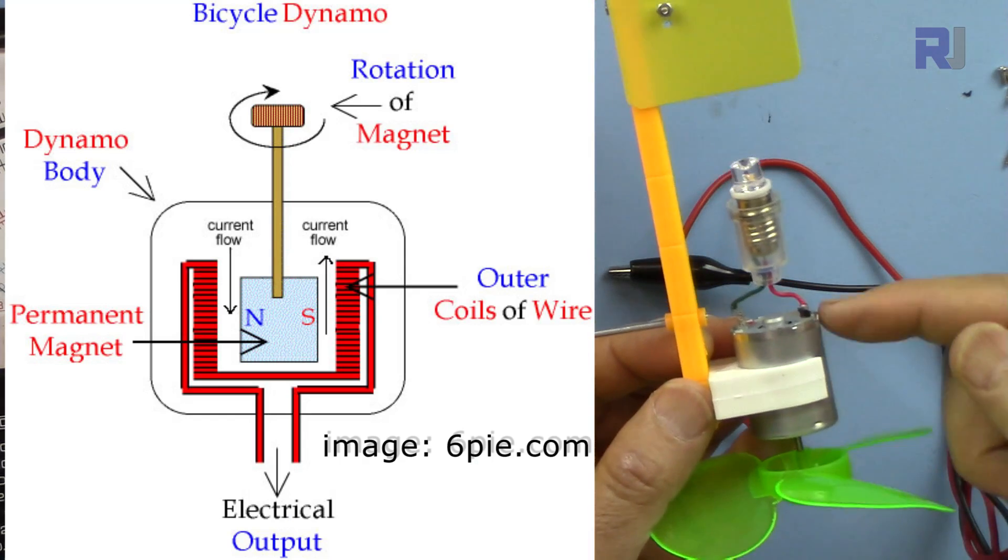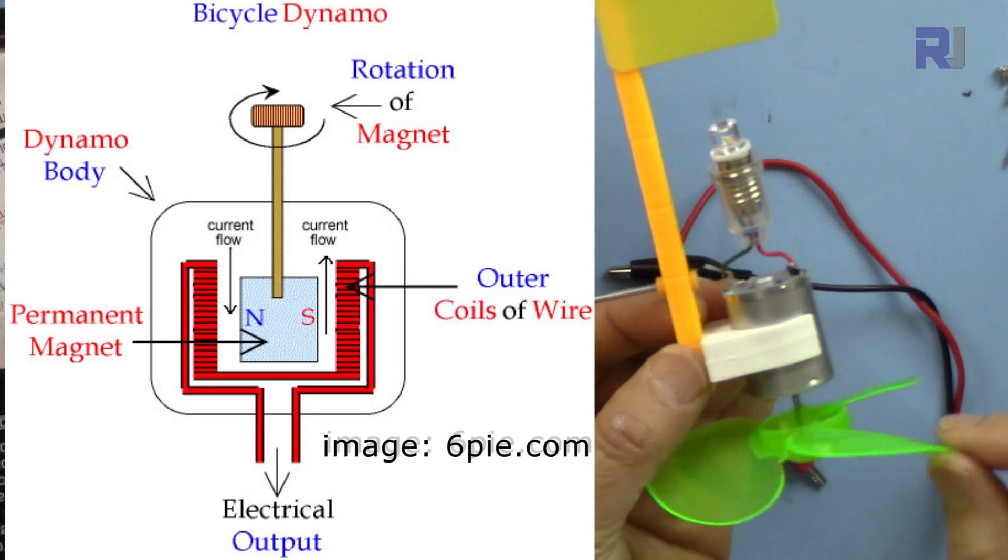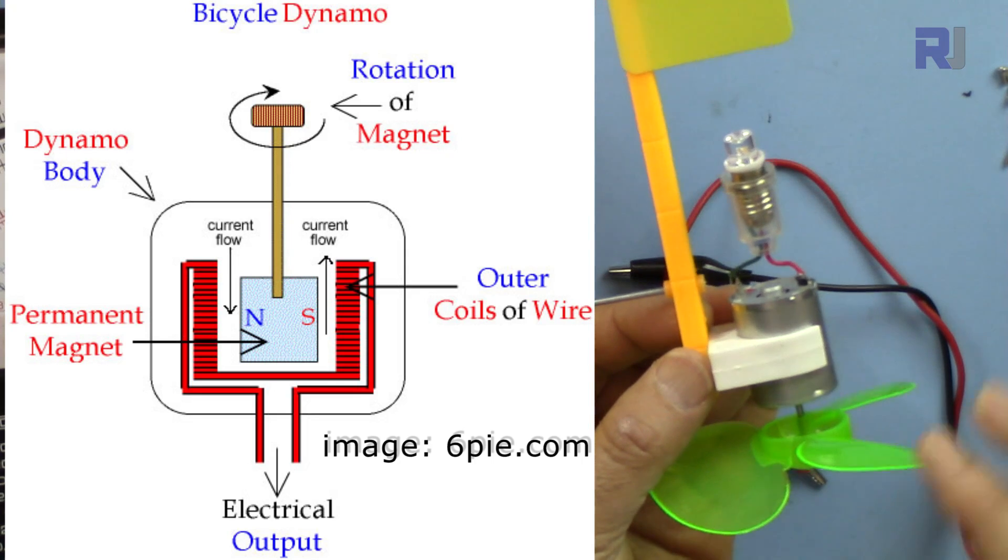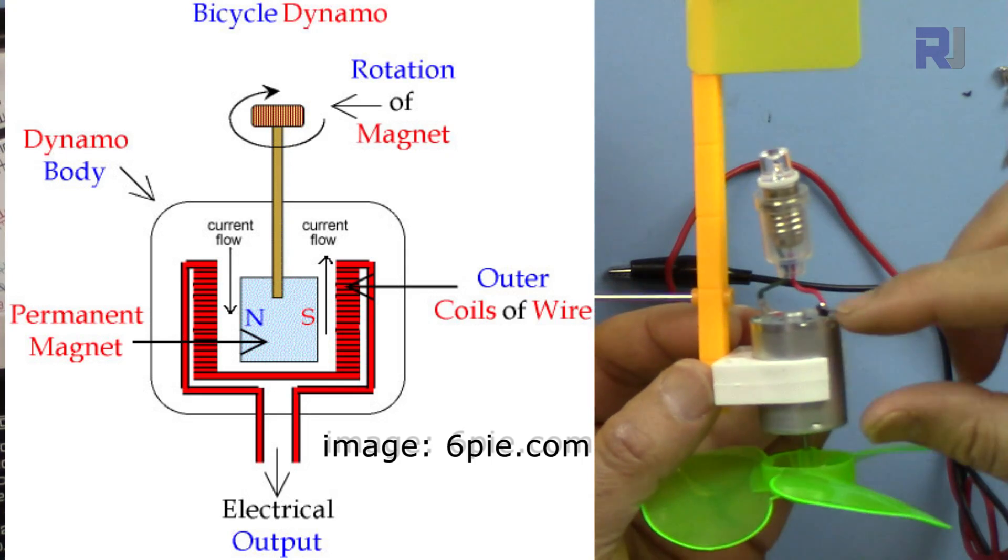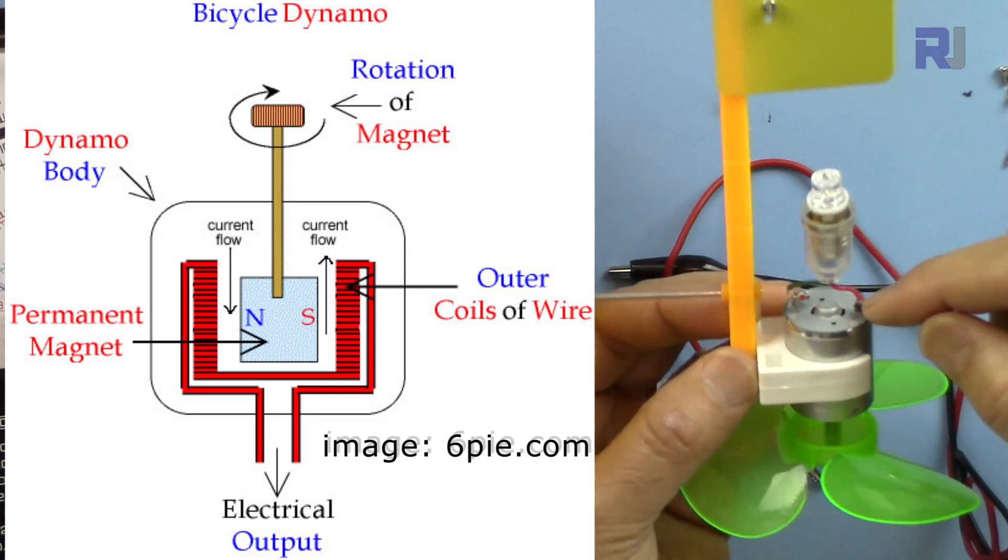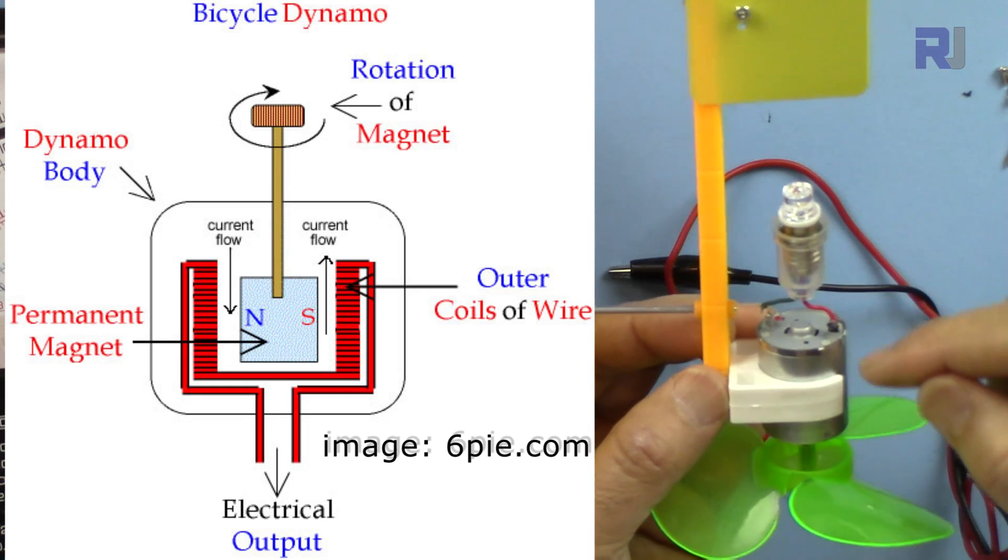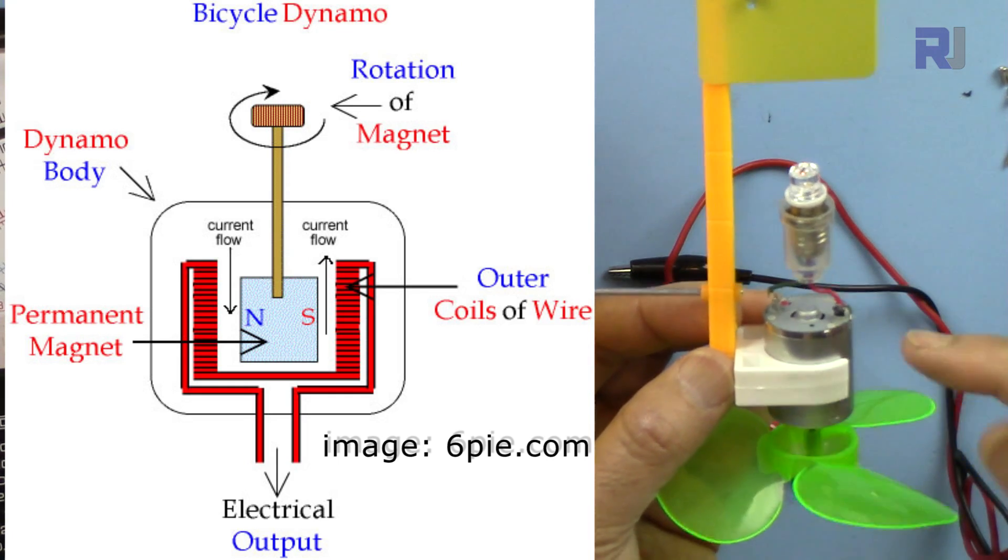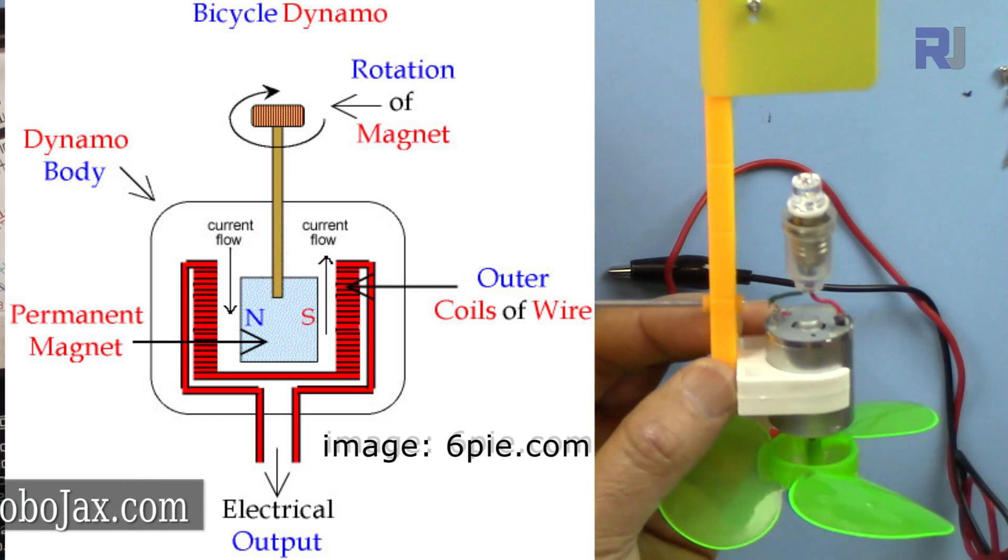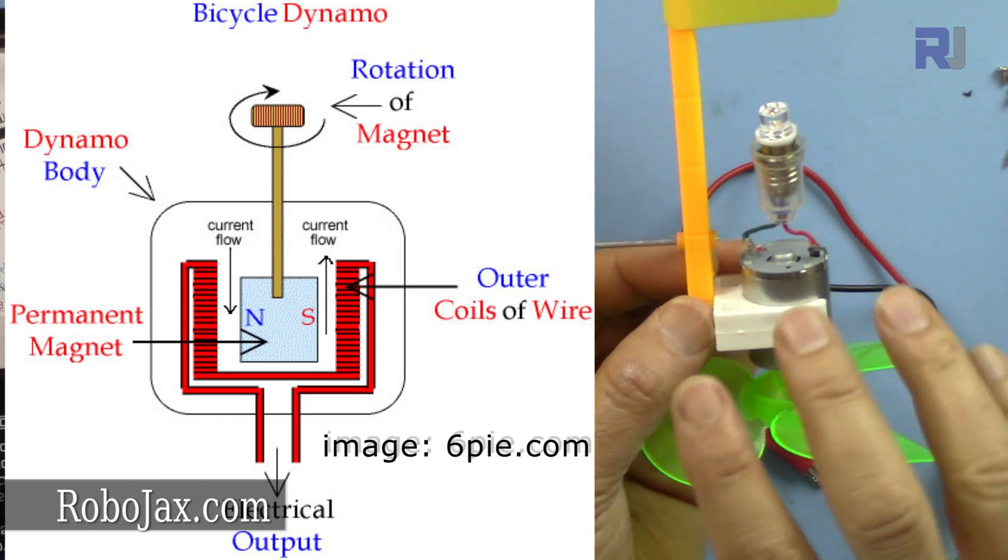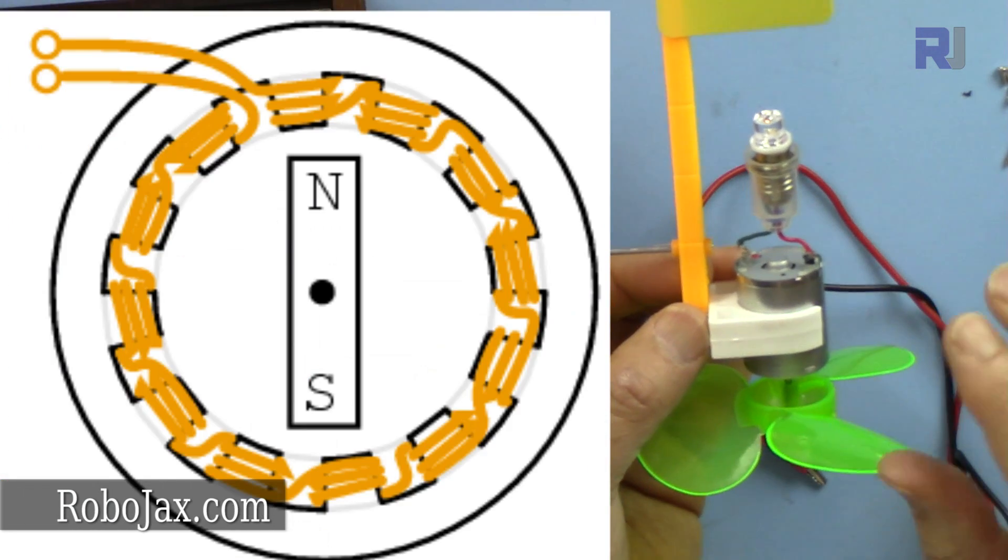This works by having a magnet at the middle which is connected here, so this will rotate the magnet. Around the magnet we have windings, the two windings that are connected to these two wires. The winding starts from one side and comes to the other side.